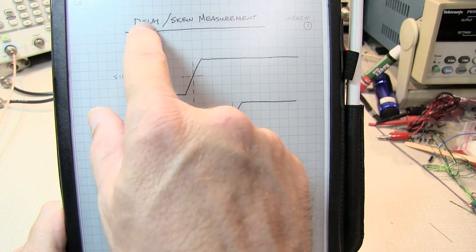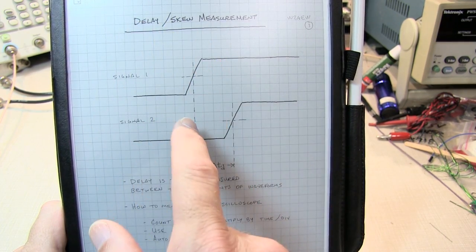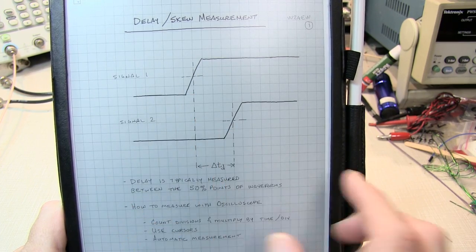In today's video, we're going to talk about the delay or skew measurement, which is a measure of the time difference between two signals.